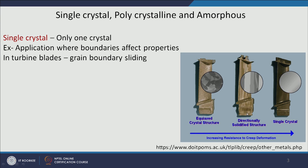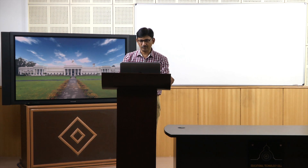Three turbine blades are shown here. One is of course polycrystalline — you can see different crystals with different colours. Another blade is directionally solidified, meaning the grains are oriented in a particular direction only, so the grain boundaries are all parallel to the length of the turbine blade. The third is a single crystal — here you see no microstructural features because there is only one crystal and we are not looking at the atomic structure.